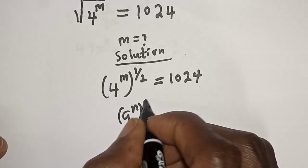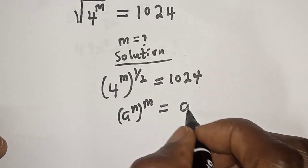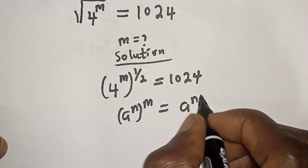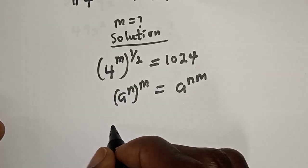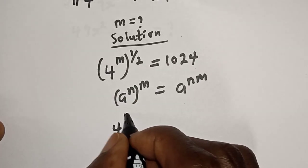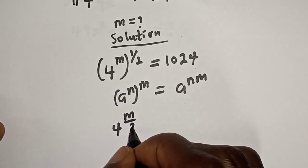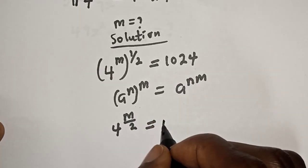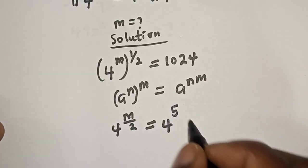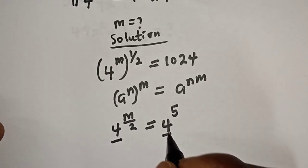This is equal to a raised to power nm. So we have four raised to power m over two is equal to 1024, which can be written as four raised to power five. And they have the same base, four.